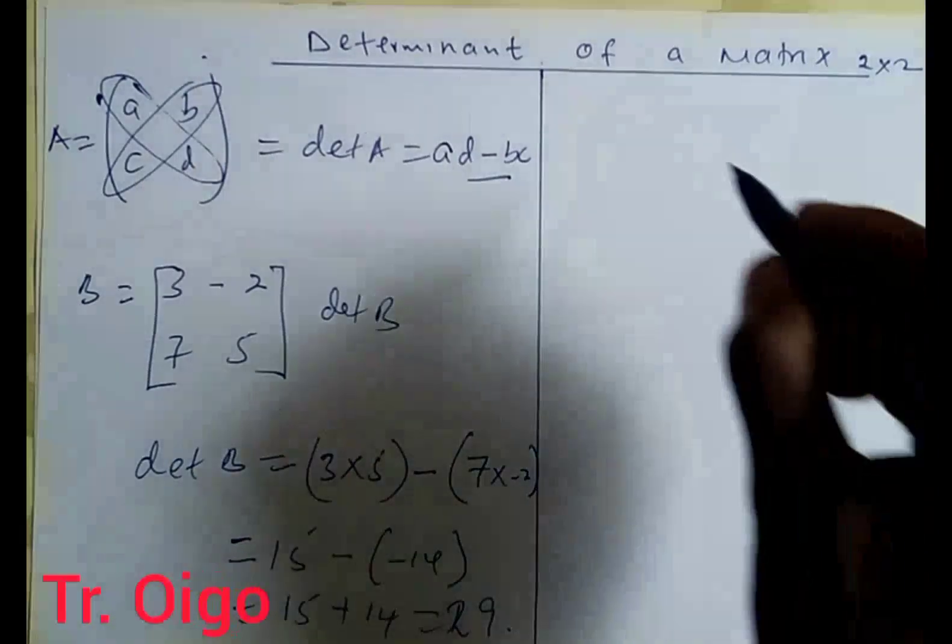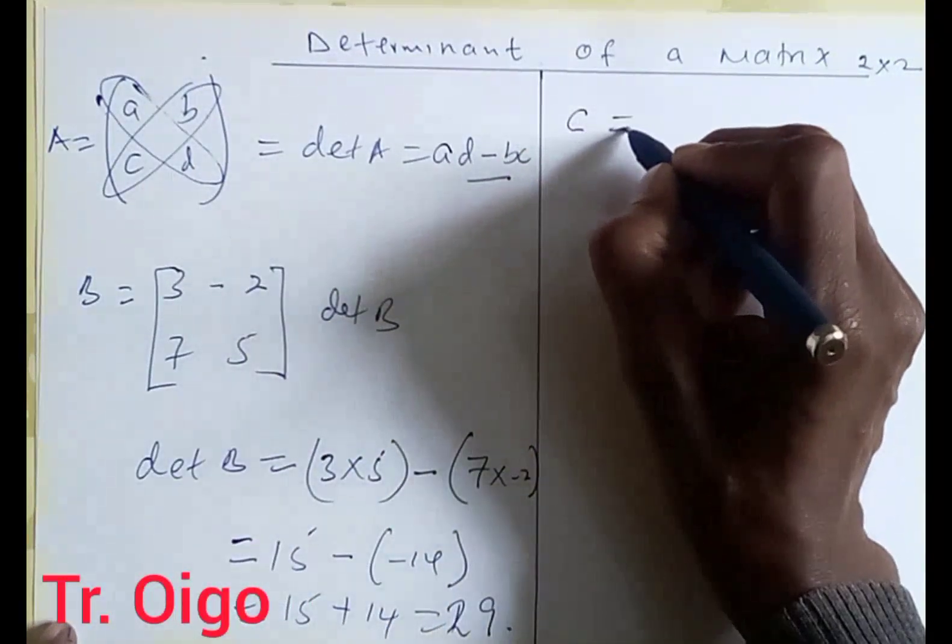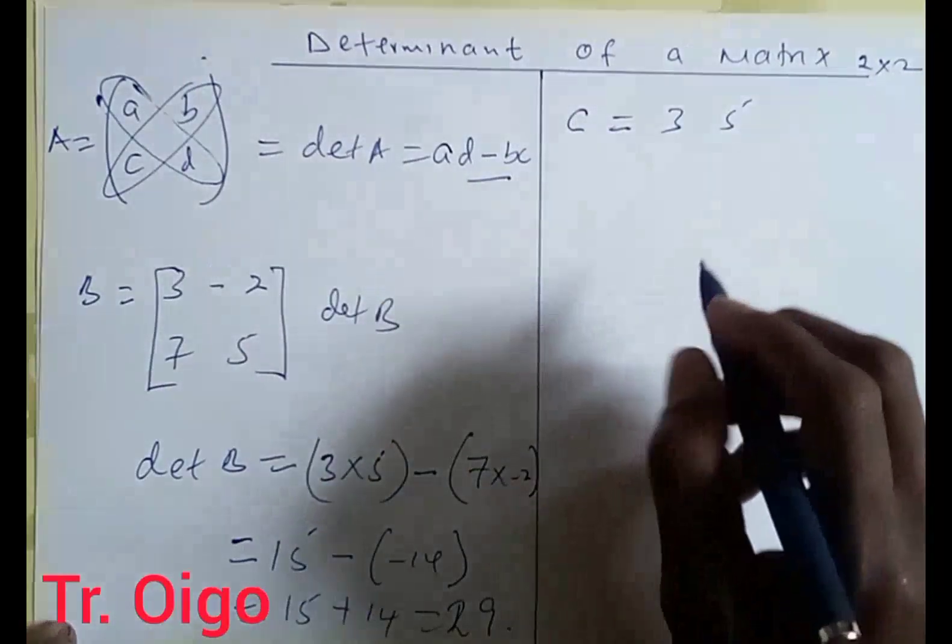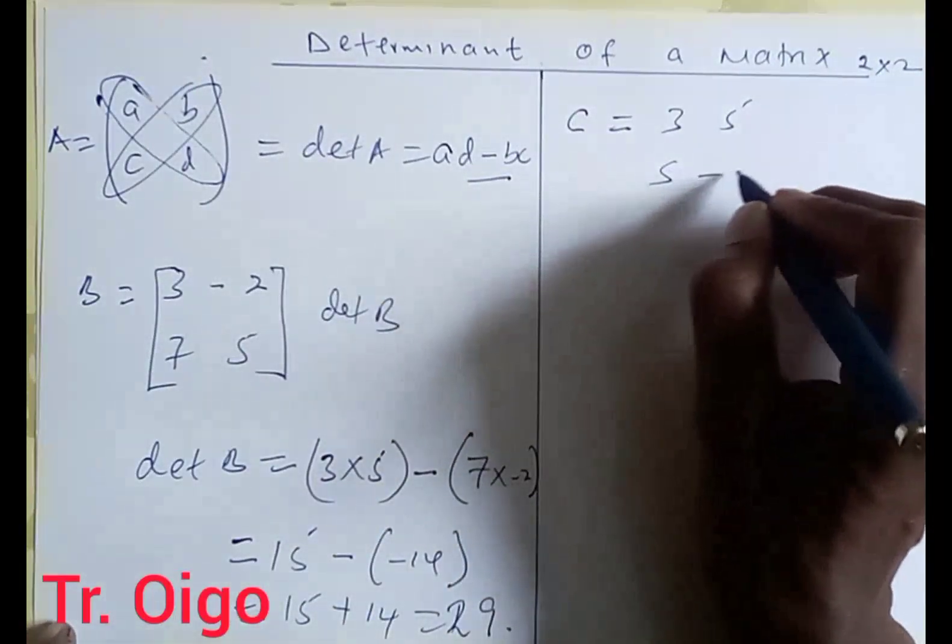Another one, you can also be given another example C, which gives you a matrix of 3, 5, and then you have 5, negative 8.